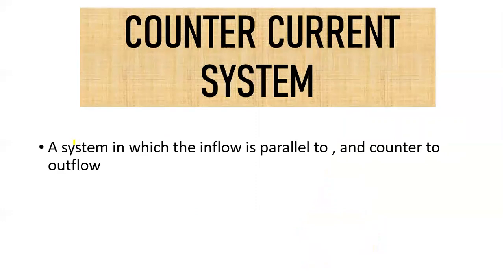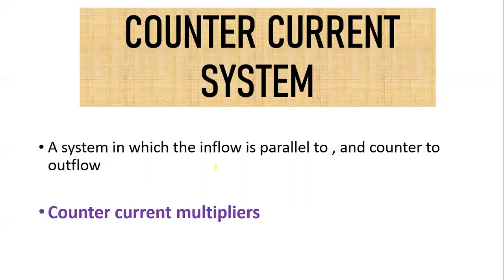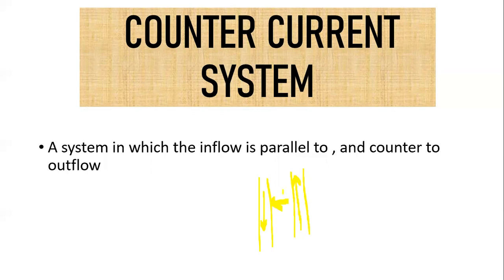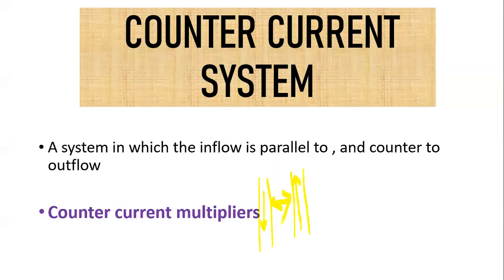The countercurrent mechanism is defined as a system in which the inflow is parallel to and counter to — meaning opposite to — the outflow. The requirements for a countercurrent system, as given by GK Pal, are: you require two tubes; the flow of fluid in these two tubes should be in opposite directions; and these two structures should be in close proximity. These are the three requirements for a countercurrent system.